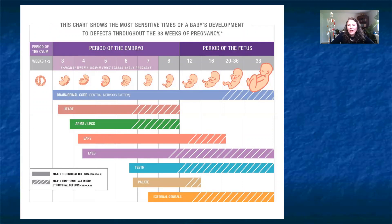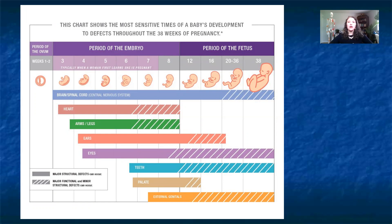Many of you asked what organs develop when. This chart shows the development cycle of the embryo and fetus. The first thing to develop is actually the brain and spinal cord — the brain is developing in the first couple of weeks and continues throughout. The heart is next, followed by structural components like arms, legs, ears, and eyes. External features are the last to develop. The lungs actually develop midway through fetal development but are one of the last things to become functional — which is why premature infants often need a respirator and why surfactants in the alveoli are critical for the infant's first breath.